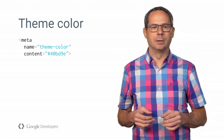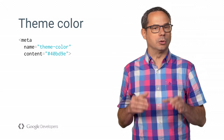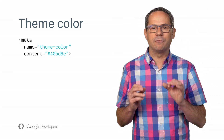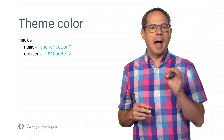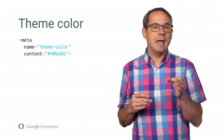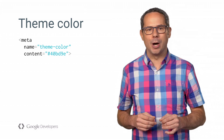Let's start with theme color. It gives you an easy way to add a primary brand color to your site or app, and provides an extra visual pop in the address bar and tab switcher. When your app has been added to the home screen, it also sets the status bar color. The syntax is pretty easy — add a meta tag to the head element of each page with name equals theme-color and set the content to the color you want.